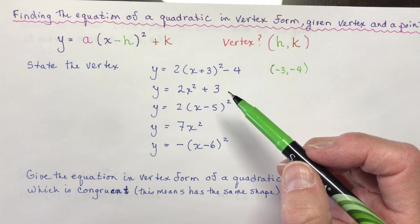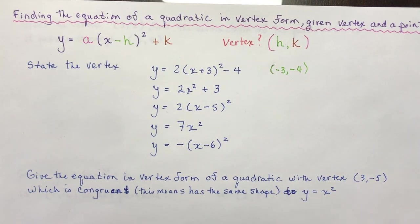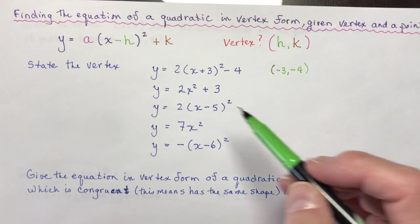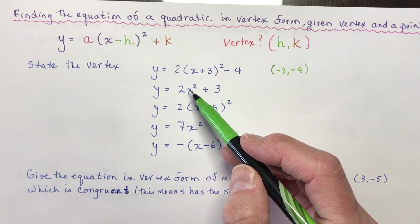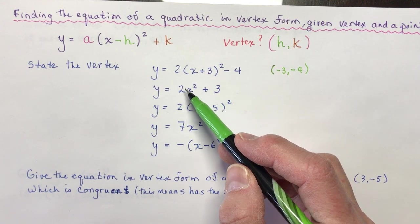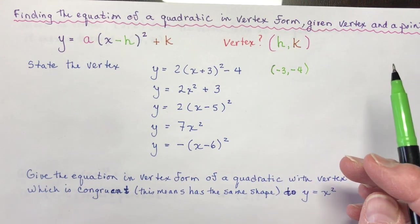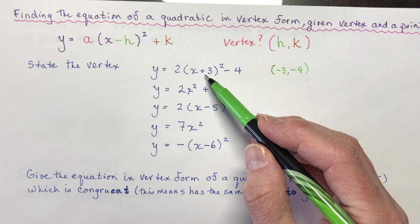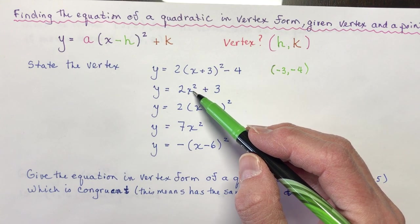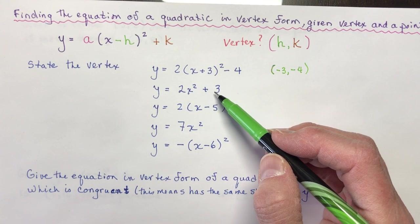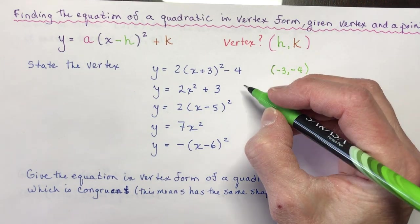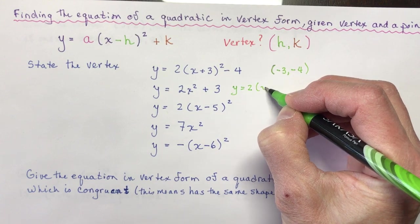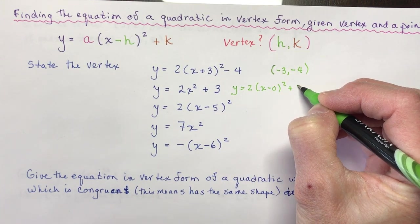So if you think about it in steps here, if I took off this plus 3 and I just had y equals 2x squared, or if I even took off the 2, you'd say that's just a vertex at 0 and 0. When I do plus 3, that means I'm shifting the parabola up 3 units. So in this case, it's 0 and 3 because I could also write this equation like this: 2(x minus 0) squared plus 3.